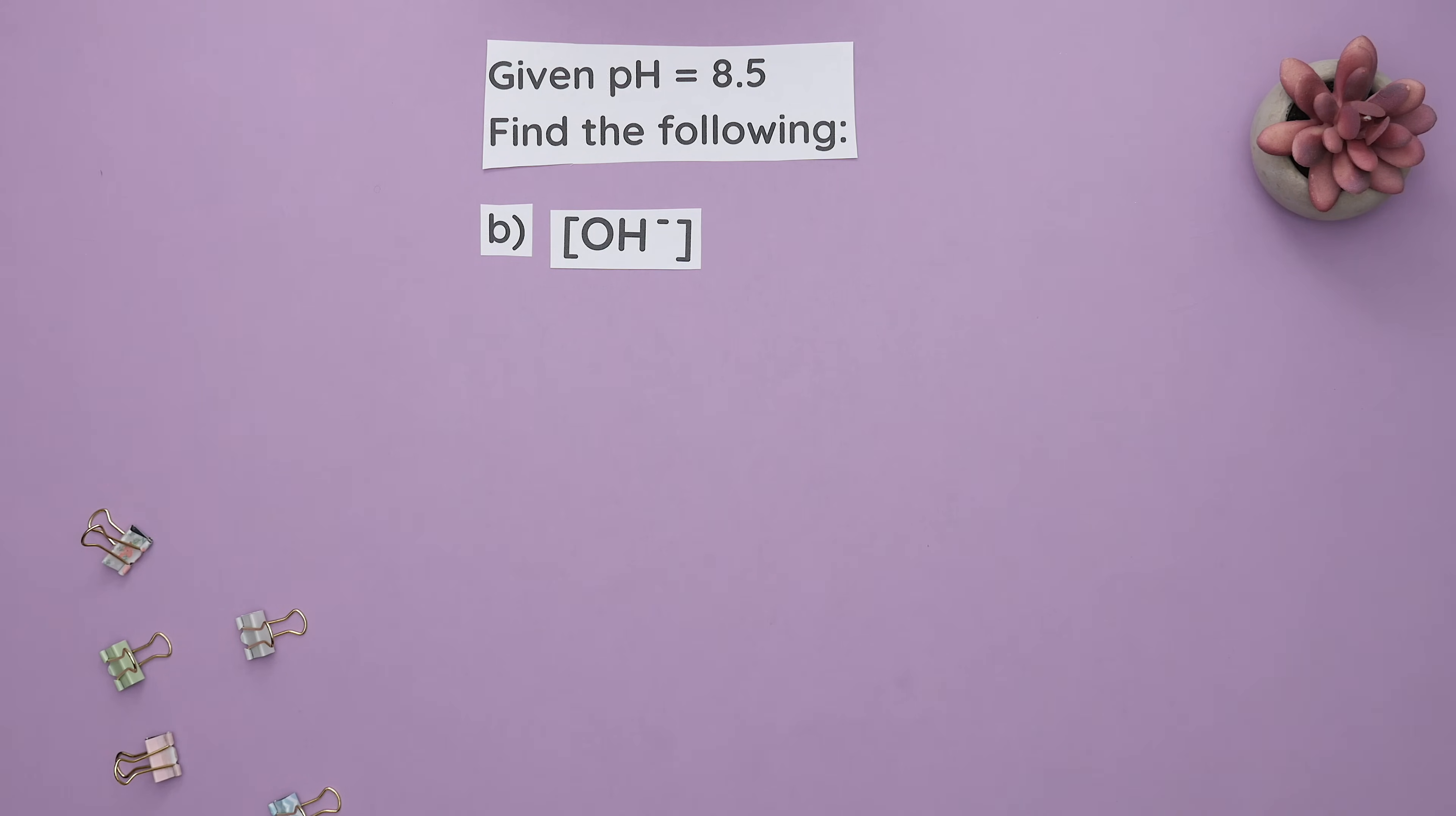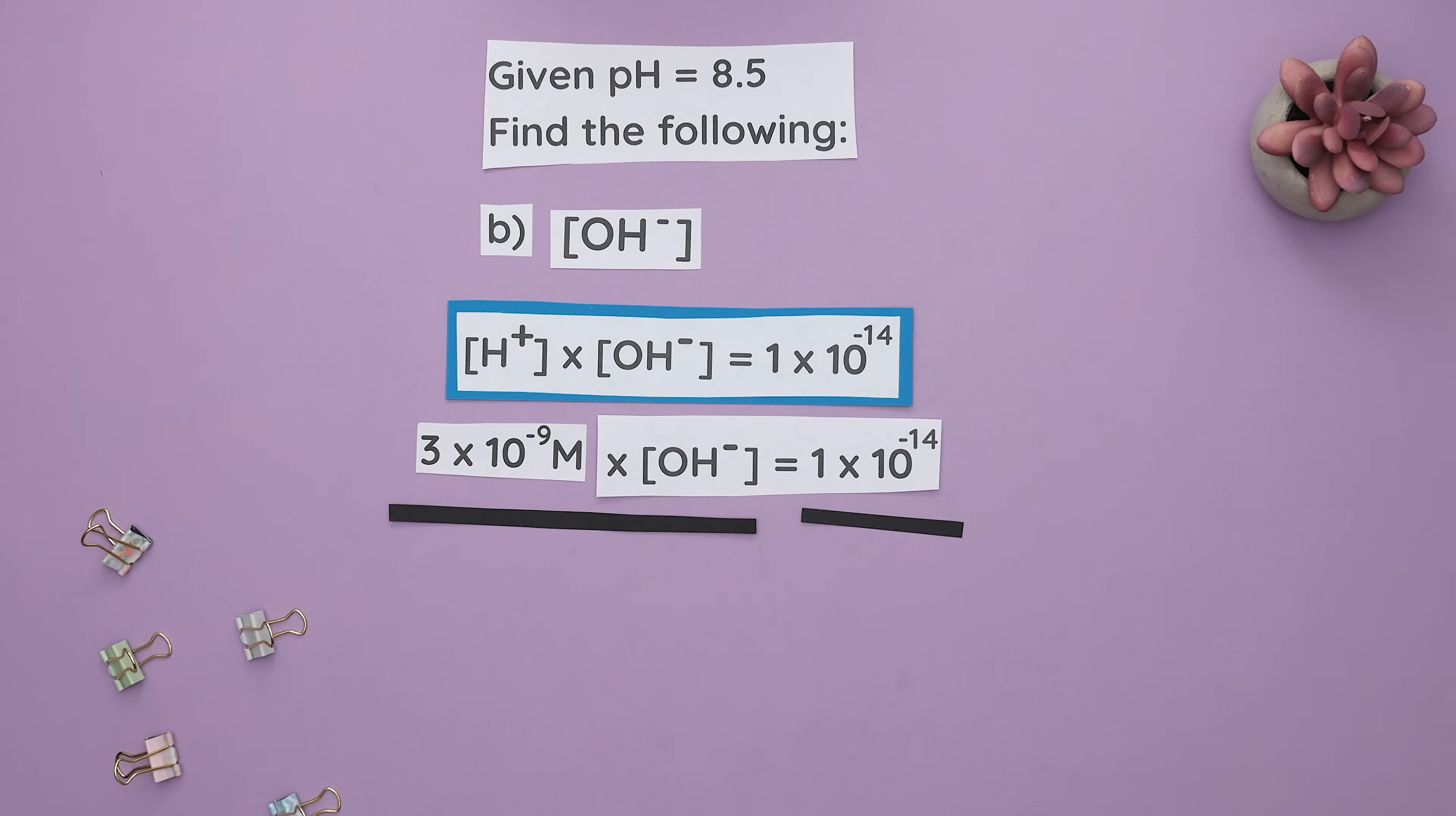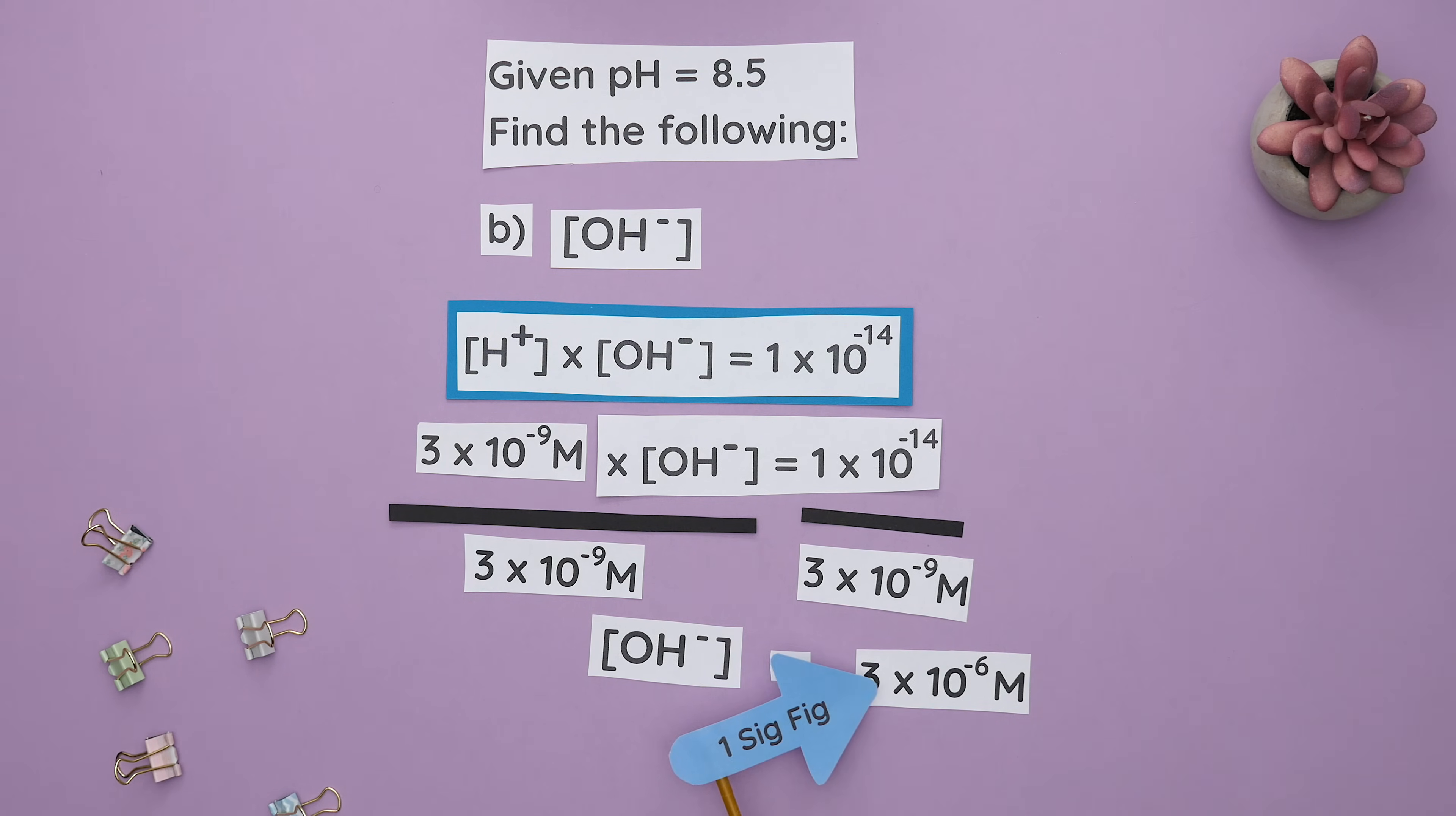Part B. To find our base concentration, we will use this formula and plug in the acid concentration we'd just found. Divide both sides and we will get this as our base concentration rounded to one sig fig.